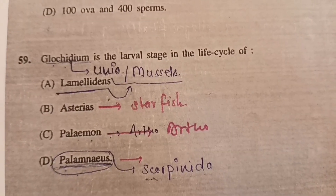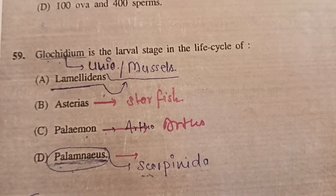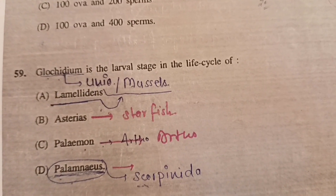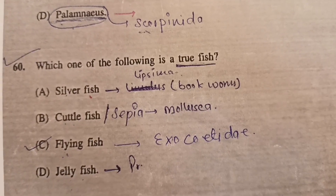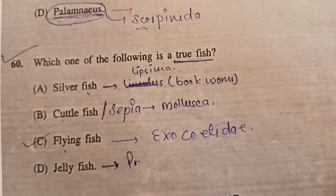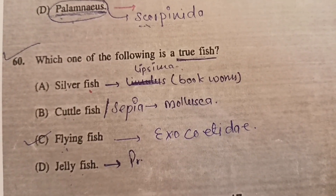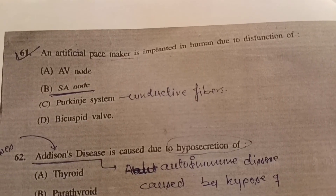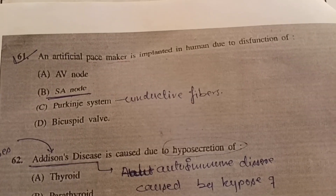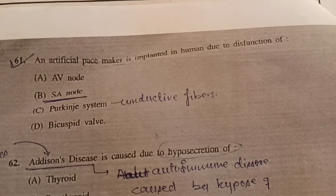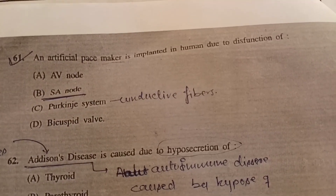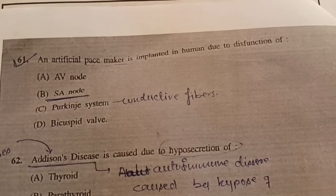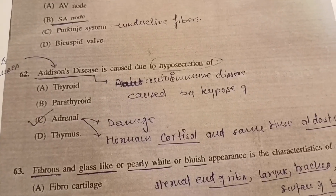Question 59: Glochidium is the larval stage in the life cycle of — answer will be A, Lamellidens. Question 60: Which one of the following is a true fish? Answer will be flying fish. Question 61: An artificial pacemaker is implanted in humans due to dysfunction of — answer will be B, SA node.